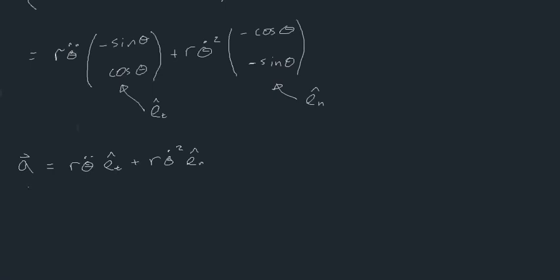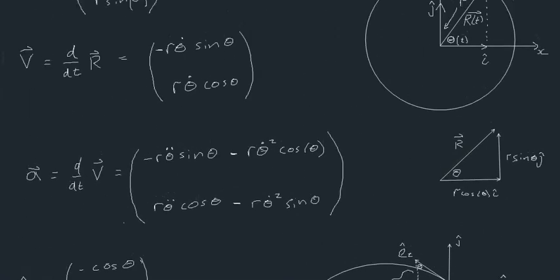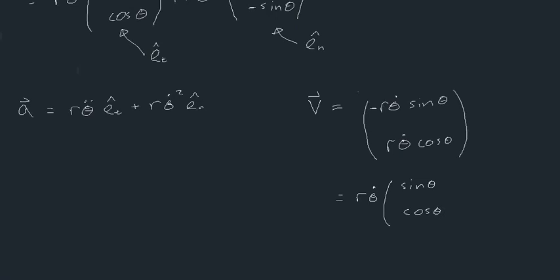We're almost done — this is already much more simplified. Let's also re-describe our velocity vector in terms of eₜ and eₙ. The velocity was minus r·θ̇·sinθ and r·θ̇·cosθ. Factoring out r·θ̇ gives (minus sinθ, cosθ), which is exactly eₜ. So the velocity vector equals r·θ̇·eₜ — in the tangential direction, which satisfies our intuition that velocity is always tangential.